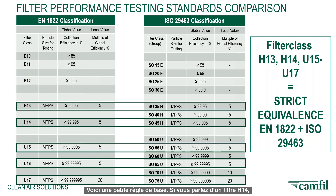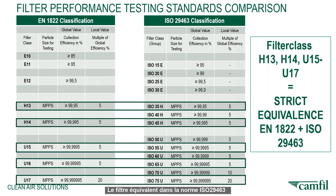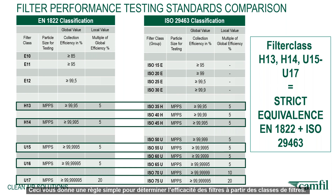A little rule of thumb: if you're talking about a H14 filter, H14 means four nines. So your efficiency at MPPS will be 99.995% — four nines. The equivalent filter in ISO 29463 would be ISO 45H, where 45 represents four nines and a five — so 99.995%. This gives you a quick way to figure out efficiency from the filter class.